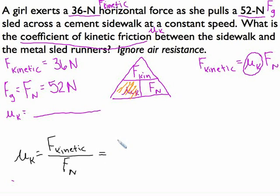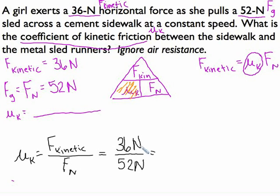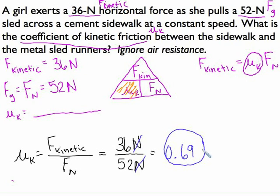We can plug in our numbers. The small number is on top, so we're going to get a decimal, and that's okay because coefficients of friction are always decimals. If you get a number bigger than one, you did something wrong. The newtons will cross out, so we get a number with no units — you do not have to put units. The answer is 0.69, which feels a little naked, but that's the way it's supposed to be.